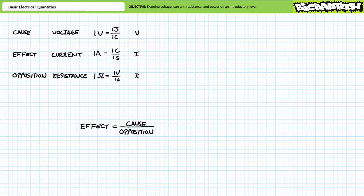This should make sense. The more effort or cause given to a project or undertaking will undoubtedly yield more effects as long as opposition to our efforts remain low. If however opposition increases, the effects will be reduced.